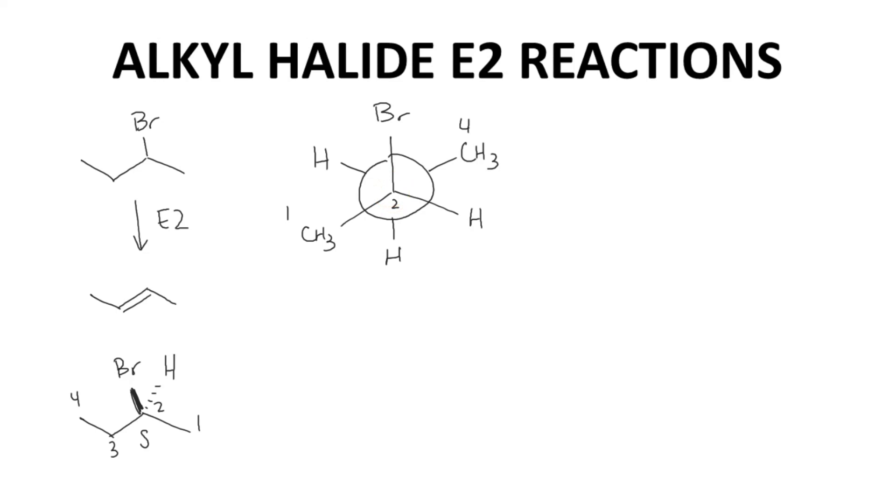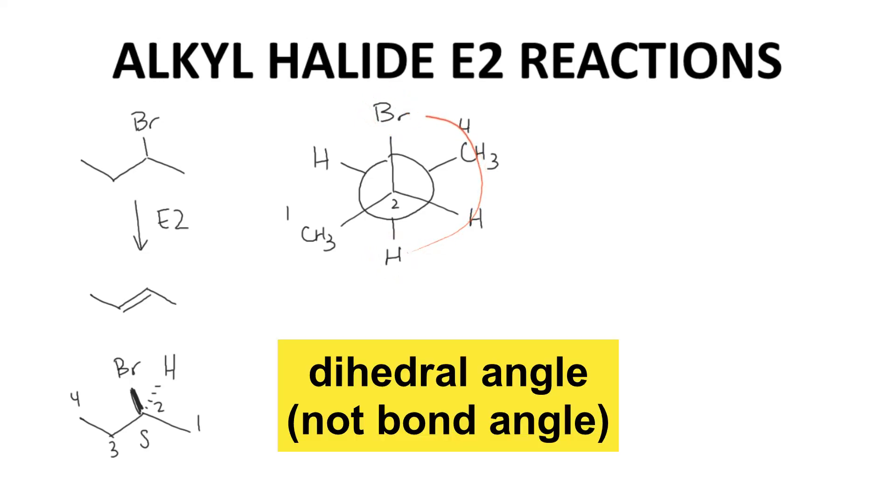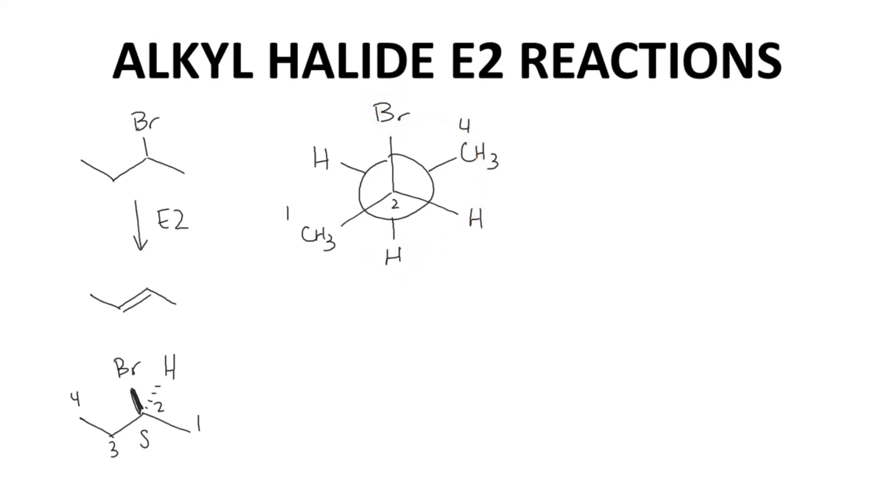Our goal is to do an E2. If we look in this Newman projection, then C3 does have a beta hydrogen that is anti, a 180-degree bond angle between the hydrogen and the bromine. If this particular conformation did an E2, the molecule would flatten out to give this alkene isomer.